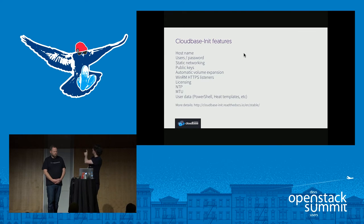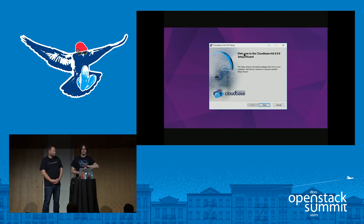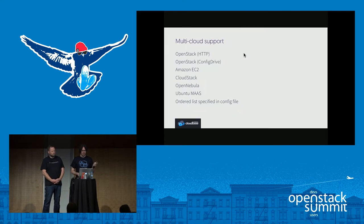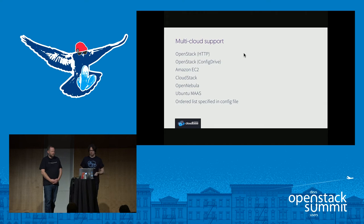More details are available at the Read the Docs documentation. How do we deploy it? There is a very simple installer that you deploy automatically or manually. When you're done, it will simply get you ready for, for example, sysprep-ing the image and rebooting. It supports not only OpenStack, but also Amazon EC2 format, CloudStack, OpenNebula, Ubuntu MAAS — we use it heavily for bare metal deployment with MAAS — and quite a few more.